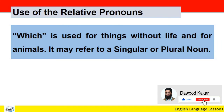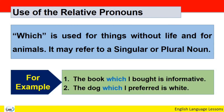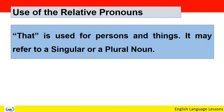'Which' is used for things without life and for animals; it may refer to a singular or plural noun. 'Which' چیزوں کے لئے یا بے جان چیزوں، یا جانوروں کے لئے استعمال ہوتا ہے، چاہے singular ہو یا plural۔ For example: 'The book which I bought is informative.' 'The dog which I preferred is white.' ایک میں thing without life اور دوسرے میں animal — لیکن دونوں میں relative pronoun 'which' استعمال ہوا۔